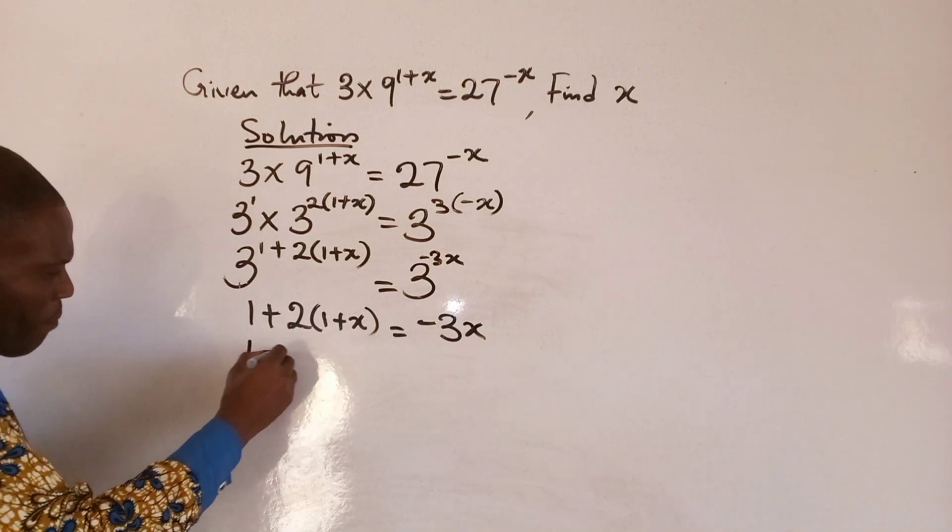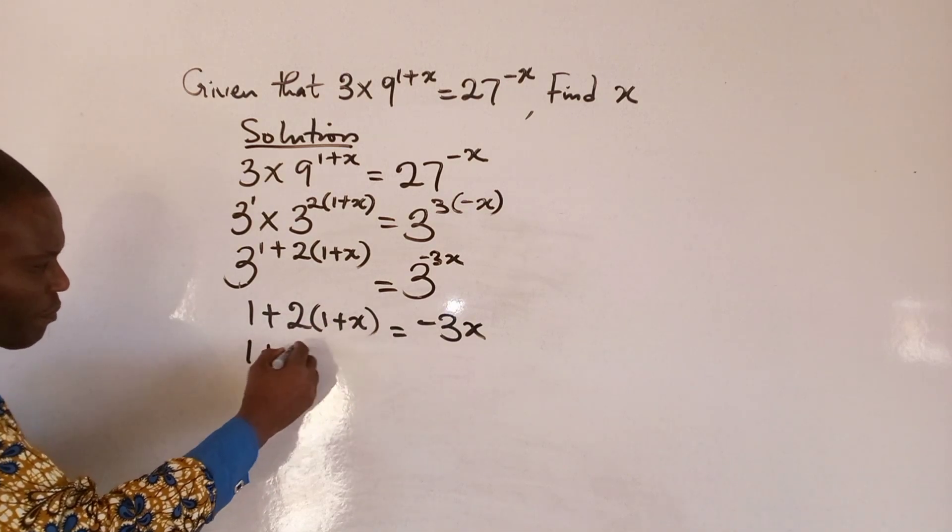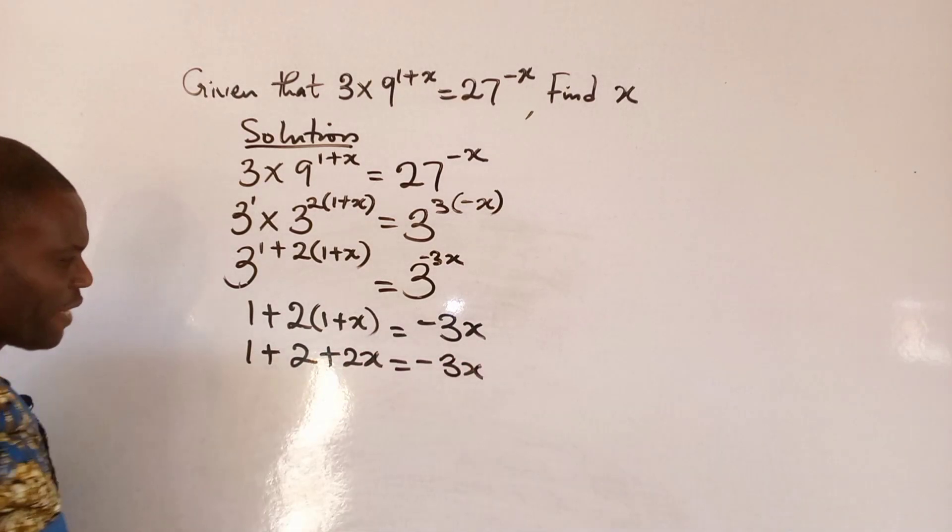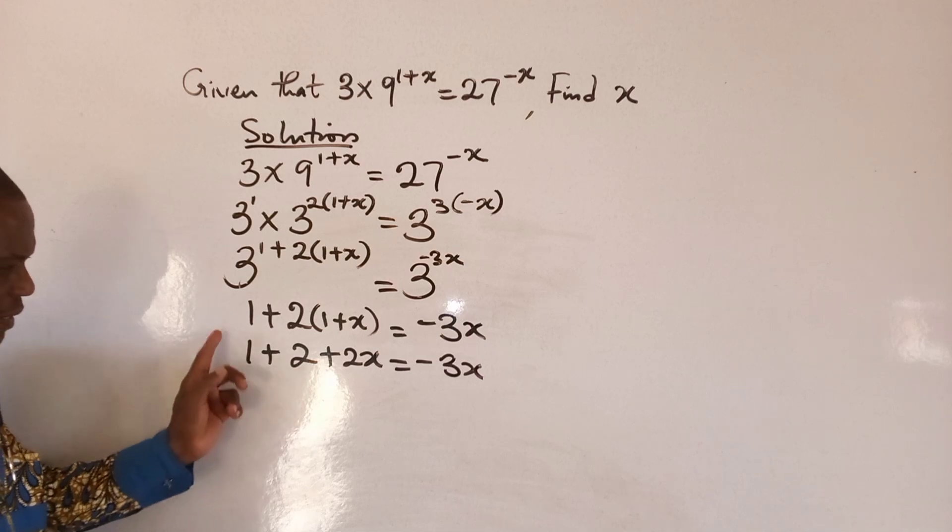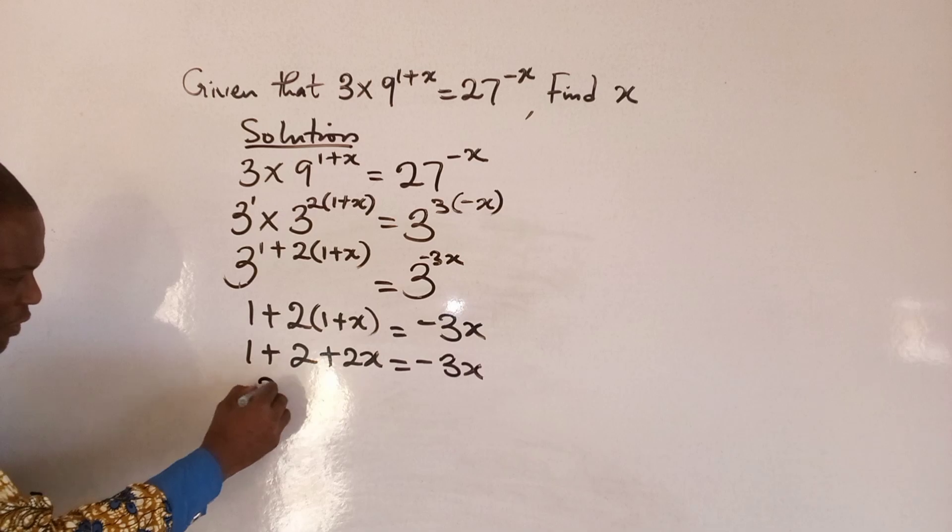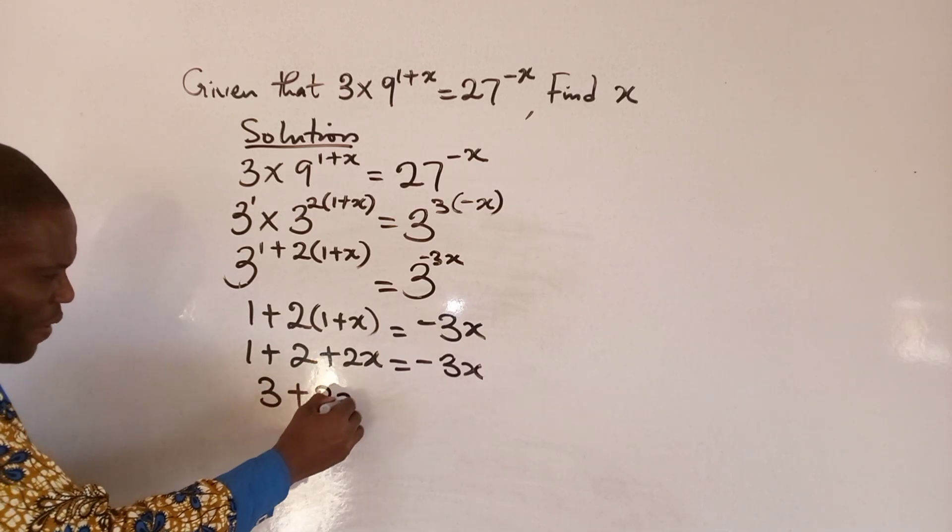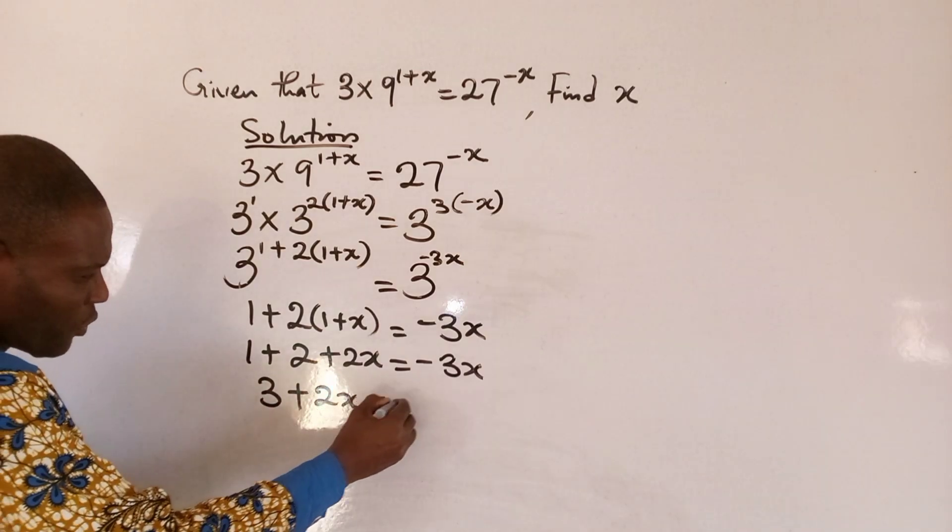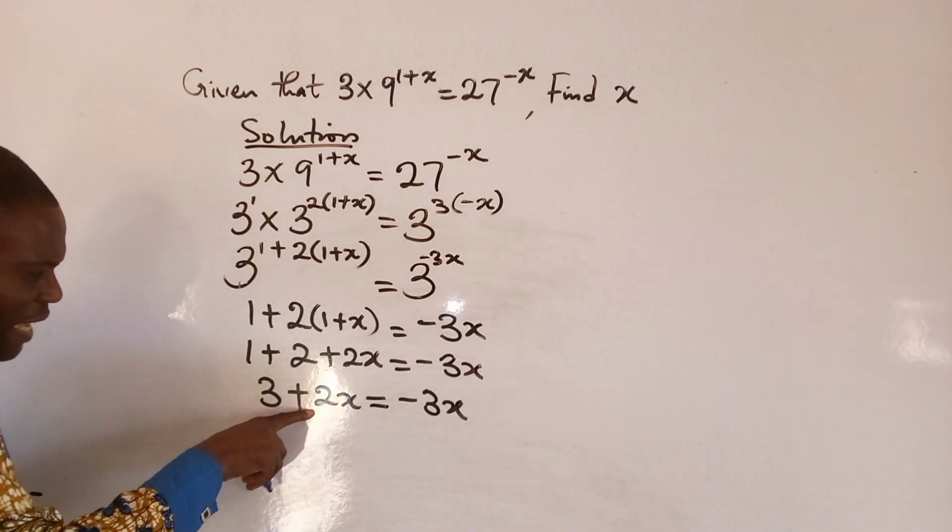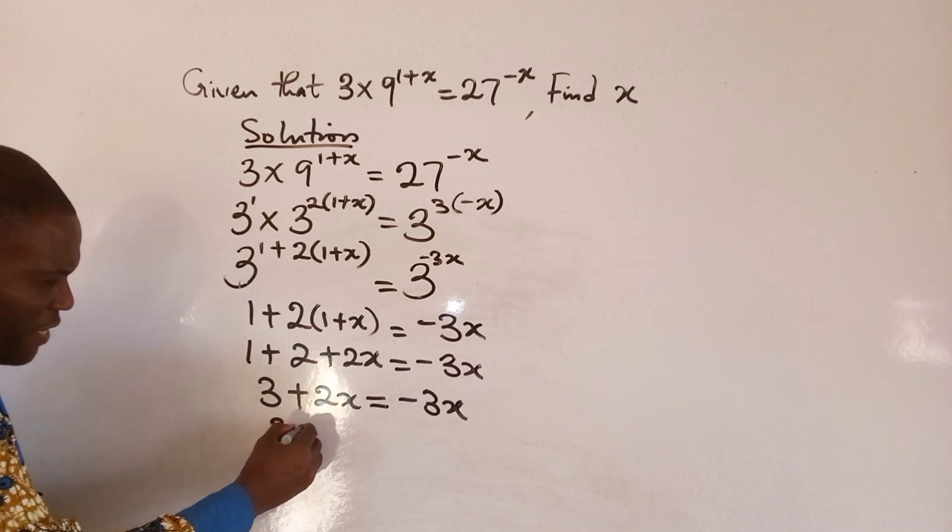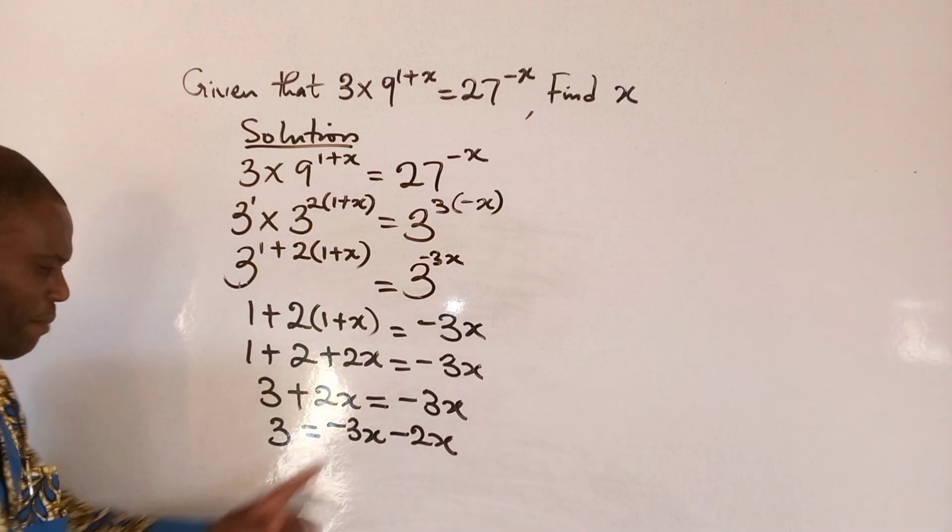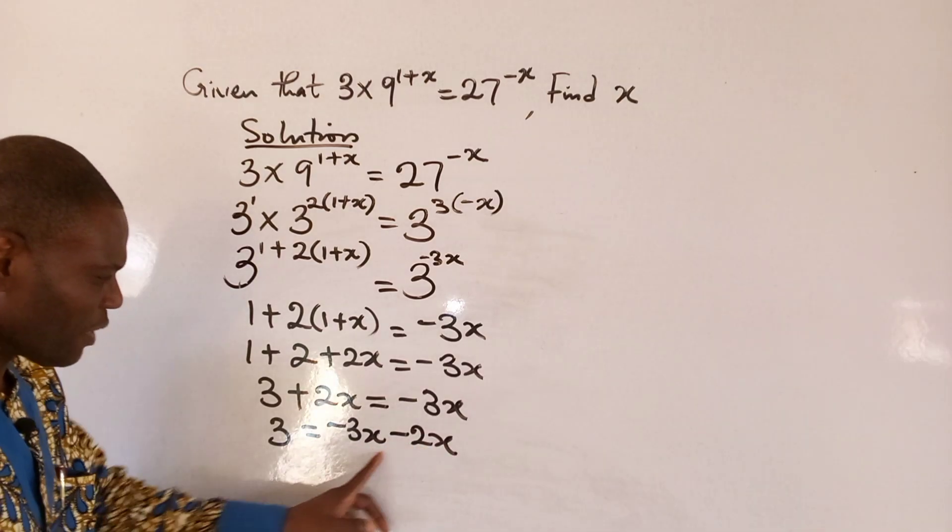So, let's open up this bracket, 1 plus, using distributive law, we have 2 plus 2x equals to minus 3x. So, this is the same, having the same like terms, we use like terms here, we have 3 plus 2x equals to minus 3x. So, moving this one over the equals to sign, the sign will change. So, we have 3 equals to minus 3x minus 2x. And minus 3x minus 2x will give us minus 5.